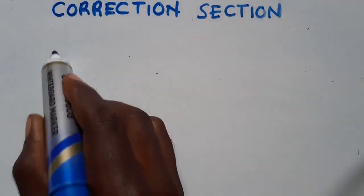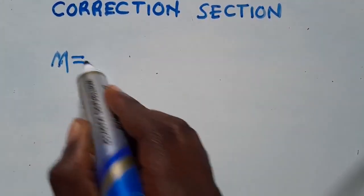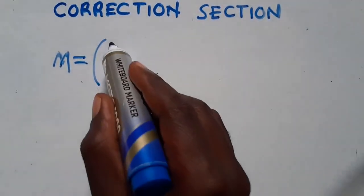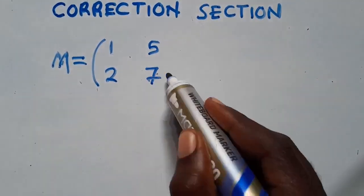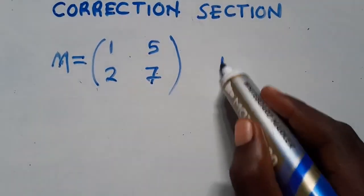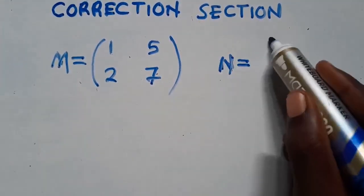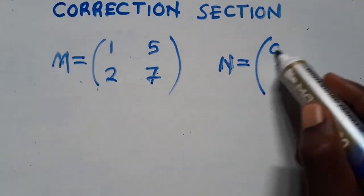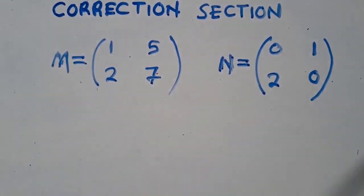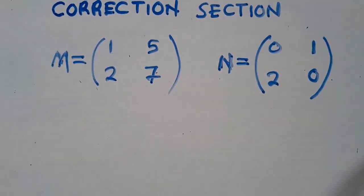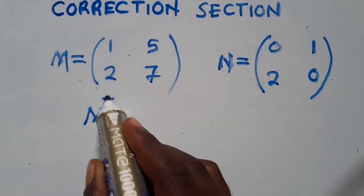We are given a matrix. Matrix M is equal to 1, 2, 5, 7. We also have N, which was equal to 0, 2, 1, 0. This is how the questions were. The first question was saying: find M to the power T.